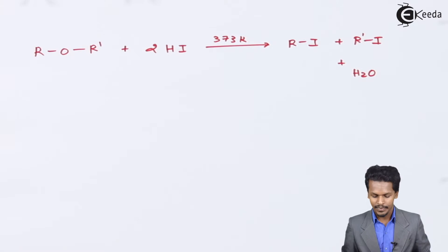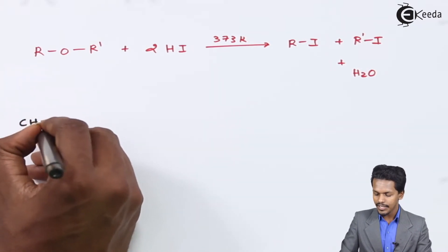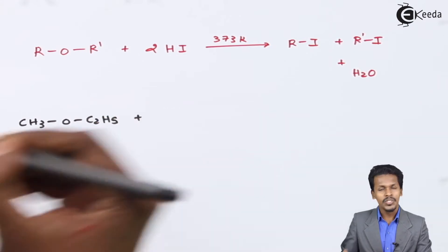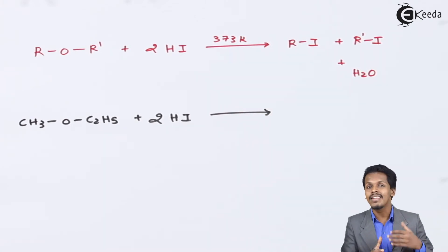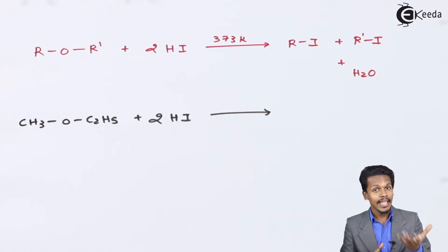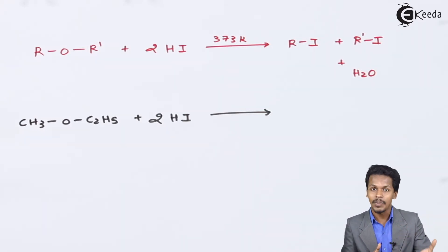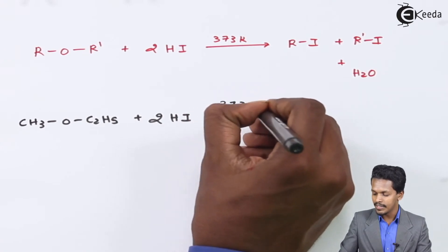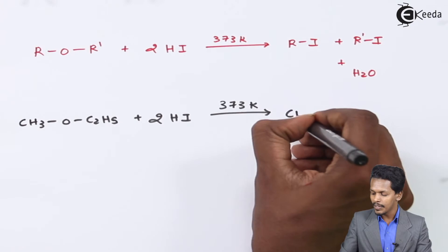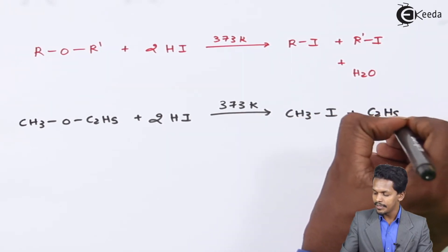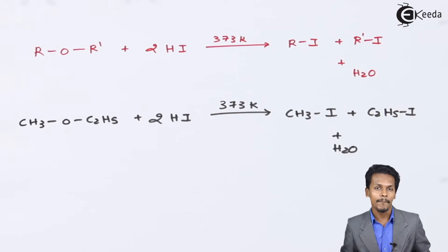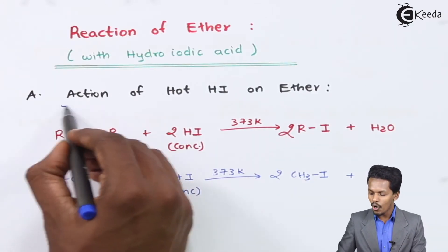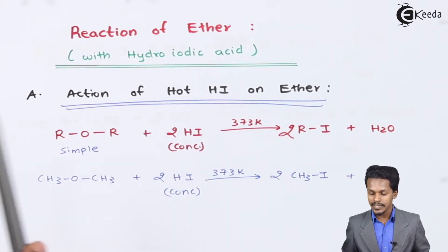For example, CH₃OC₂H₅ treated with two moles of concentrated HI at 373 Kelvin gives CH₃I (methyl iodide) plus C₂H₅I (ethyl iodide), with water as a by-product. This concludes Point A: the action of hot hydroiodic acid on ether.